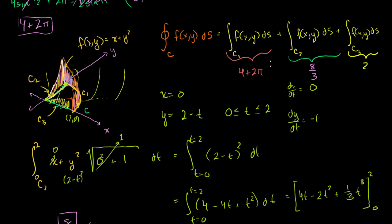To answer our question, we add up all three walls: 4 + 2π + 8/3 + 2. That's 8/3 = 2 and 2/3, so 4 + 2⅔ = 6⅔, plus another 2 is 8⅔, plus 2π. So the total line integral over the closed path equals 8 and 2/3 plus 2π. Now we can start trying to do line integrals with vector-valued functions.